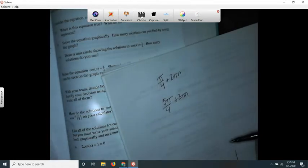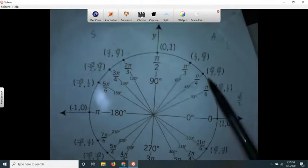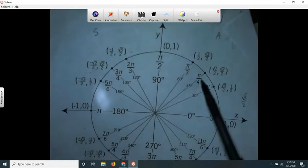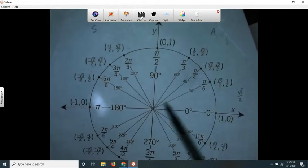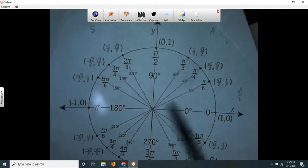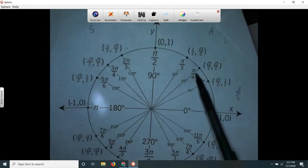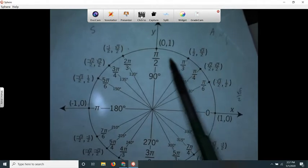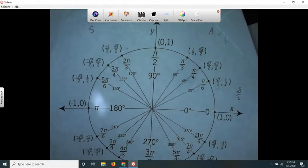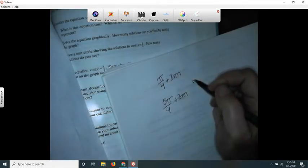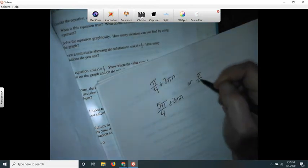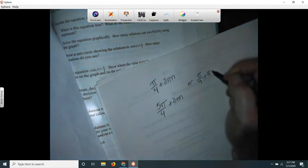So it turns out that actually in this very special case, pi over four and five pi over four, since they're separated by exactly 180 degrees, I could just say pi over four plus 180, or what is 180, plus pi. I could say, or pi over four plus pi times n.